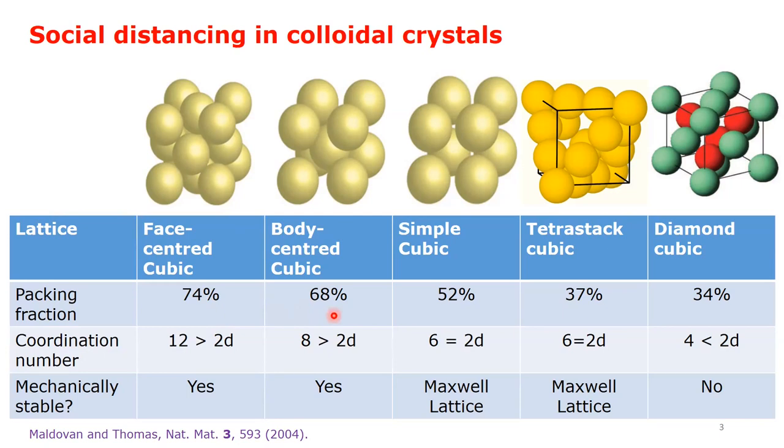Going by the Maxwellian counting rule, when the mean coordination number falls below twice the dimensionality of the lattice, the lattice becomes mechanically unstable for isotropic colloidal particles. The so-called Maxwellian lattices are in balance and are on the verge of mechanical instability.